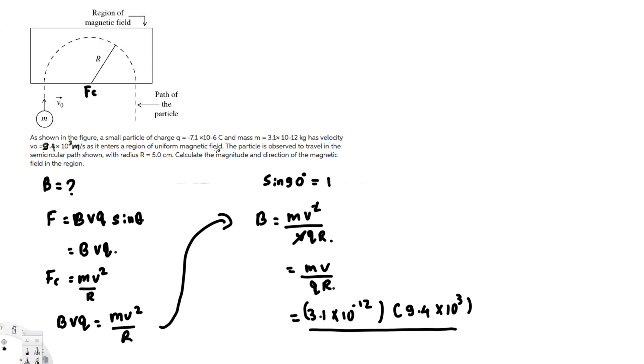For the charge, it's 7.1 × 10^-6. We use only the magnitude in this equation, but the negative charge will determine the direction at the end.